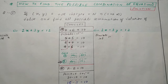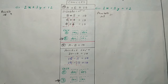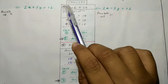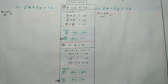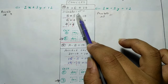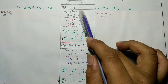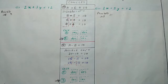अब next topic: how to find the possible combination of equation solutions। मतलब equation का हर एक possible solution बताना है। Concept यह है: suppose A + B = 10, तो एक possible solution है 5 + 5 = 10। और possible solutions determine करने की कोशिश करते हैं कि कौन सी दो entities को मिला कर 10 बनाया जा सकता है।